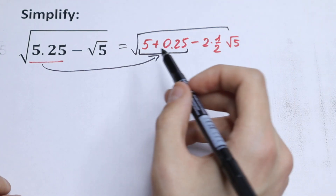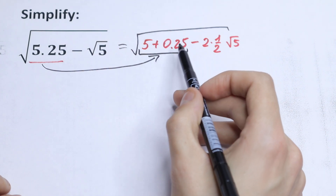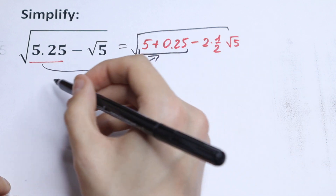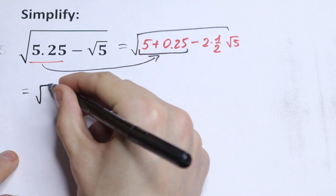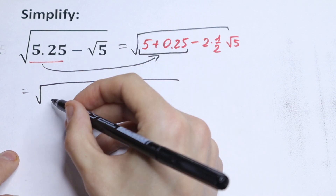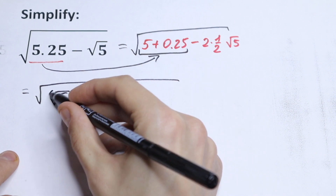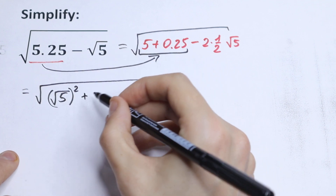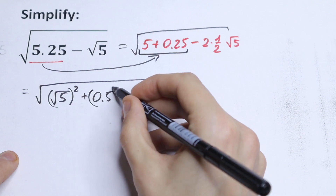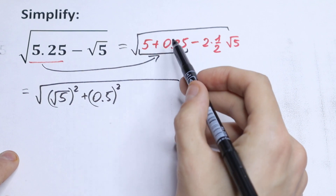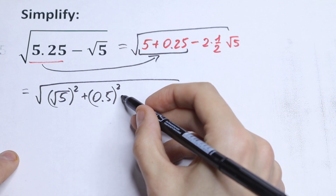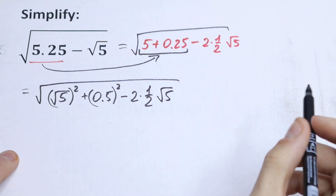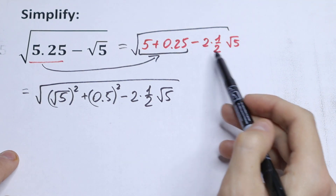Take a look — if we write this 5 as square root of 5 squared, and this 0.25 as 0.5 squared, we will have an interesting case. So we have square root of 5 squared, plus 0.5 squared, minus 2 times one-half times square root of 5 — which is the product we created right here.